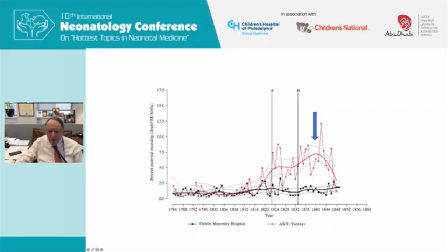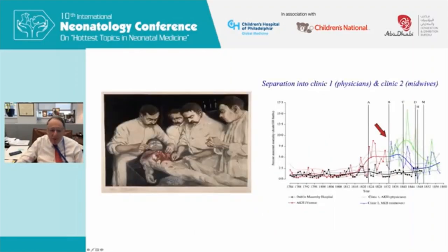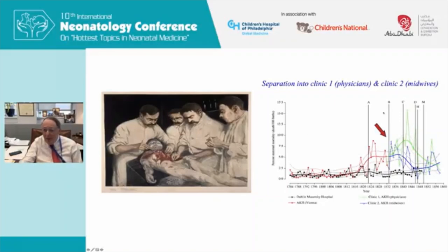The rise in mortality in Vienna occurred around the beginning of anatomical pathology there. Before that they had no department of anatomical pathology. When someone died, everybody would go to the autopsy room and perform an autopsy. As you can see in this picture, none of the individuals were wearing gloves, so they would do the autopsy, dry their hands, then go up to the obstetrical ward and examine women in childbirth.